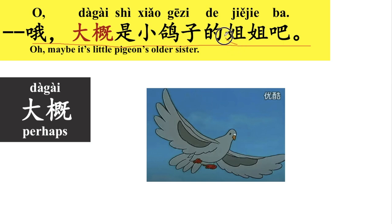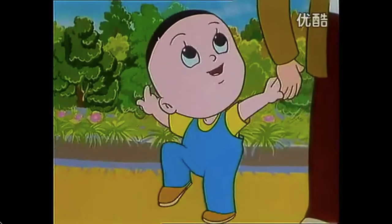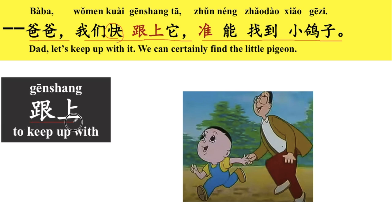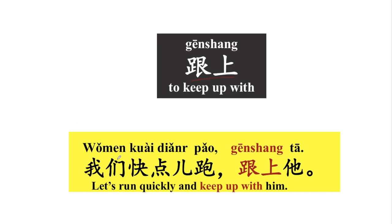大概是小鸽子的姐姐吧。好，小鸽子的姐姐，older sister. 爸爸，我们快跟上他，准能找到小鸽子。好，我们来看一下。爸爸，我们快跟上他，快就是quick. 跟上，跟上就是keep up with. 好，跟上他，他就是大鸽子。好，快点就是quicker. 跟上他，to keep up with him.